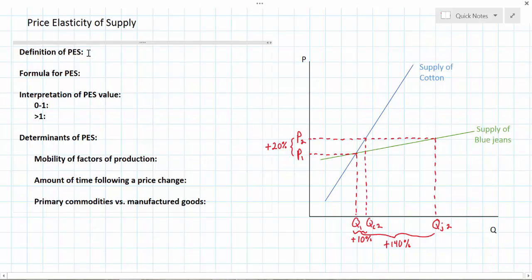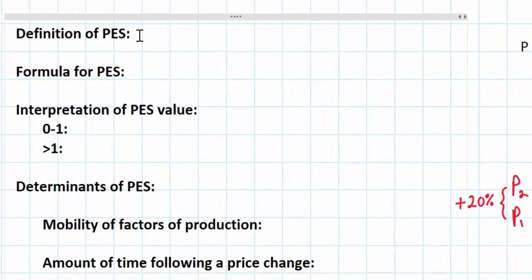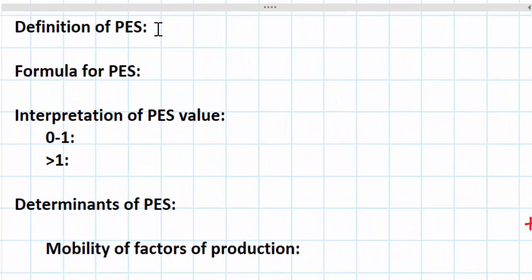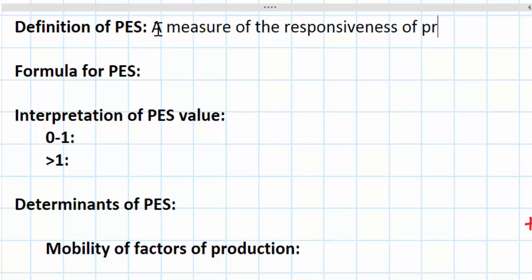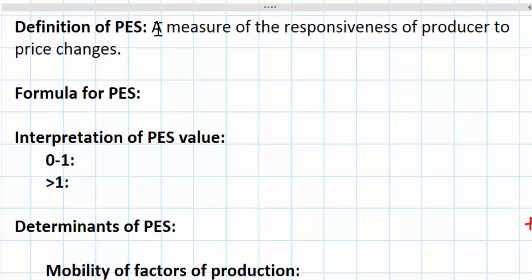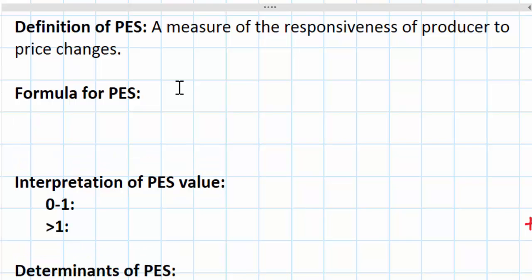First let's start with the definition of price elasticity of supply. PES is a measure of the responsiveness of producers to price changes. In this way it's a lot like price elasticity of demand, which focuses on the responsiveness of consumers to price changes. The formula for PES is also very familiar to someone who has already studied price elasticity of demand.